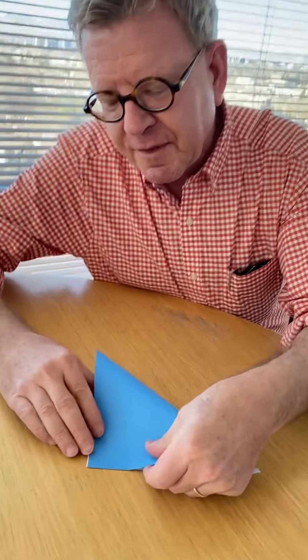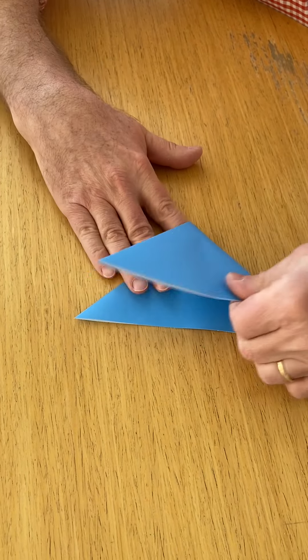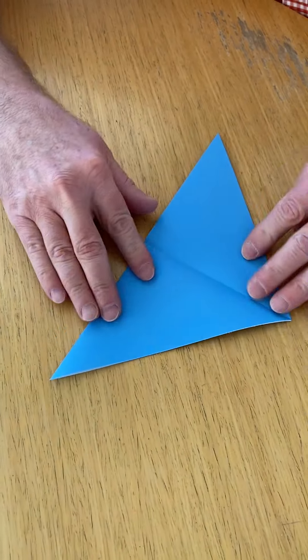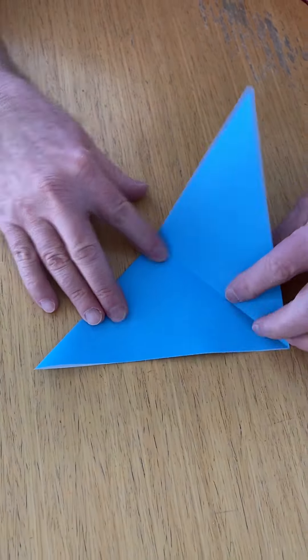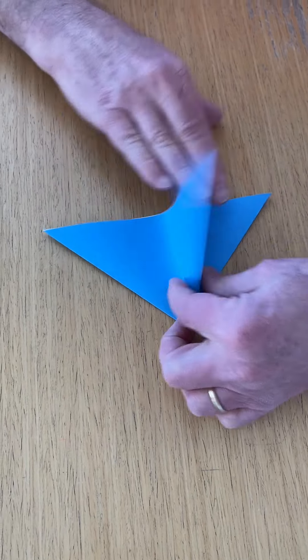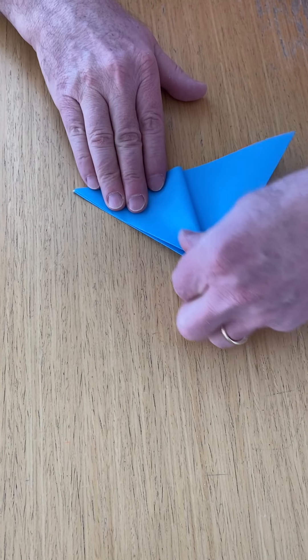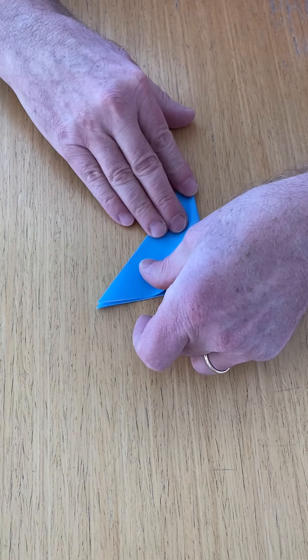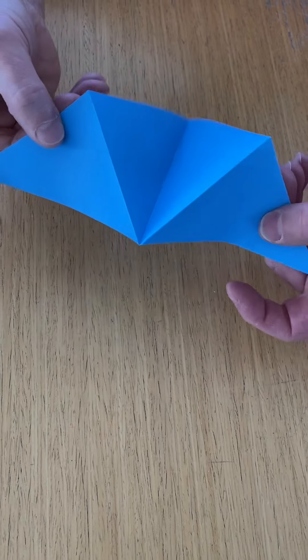We're going to first fold the sheet in half diagonally. And then we're going to fold it again in half, so we have quarters. So we fold it once, we fold it again. And now we fold this again. We take... it's going to be two flaps here, so we're going to fold one like so, and then the other on the other side to match. So this is what our model looks like so far.